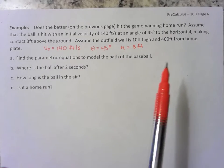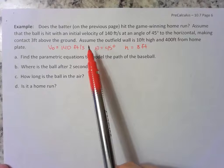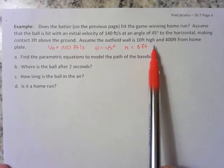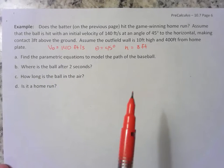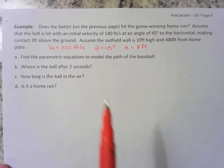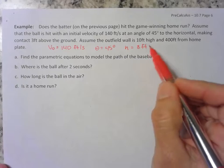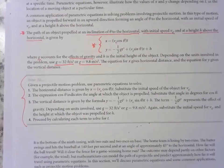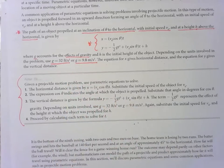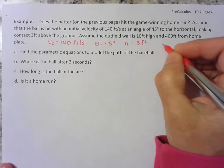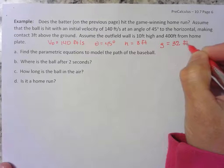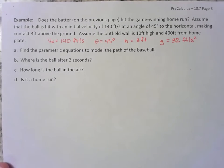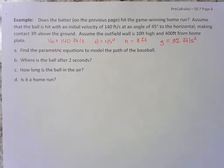They gave us some more information, which we don't need yet, but let's go ahead and read it. Assume the outfield wall is 10 feet high and 400 feet from home plate. So how do we figure all of this stuff out? Well, first of all, which gravity are we going to be using? We're given feet. And when we're given feet, we're going to use 32 feet per second squared. So let's go ahead and write that down as well. Gravity, or the effects of gravity, would be 32 feet per second squared.